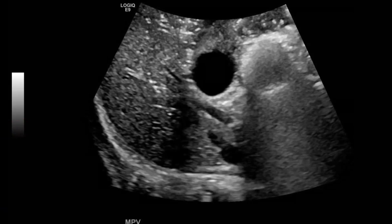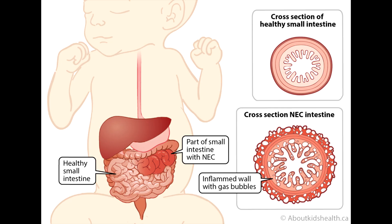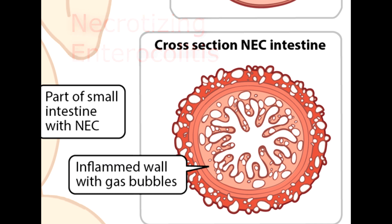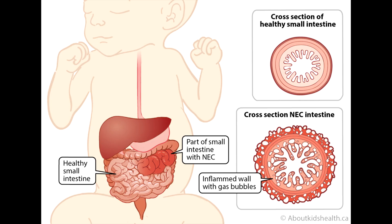On ultrasound, we usually see pneumatosis intestinalis in neonates or premature infants suffering from necrotizing enterocolitis. This patient was not a neonate or premature infant — they were an older baby who had recently had surgery and had the GJ tube. They ended up having an adhesion causing obstruction of the intestine, which caused necrosis, and the patient had to have about 20 centimeters of the jejunum removed.